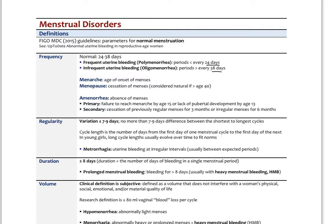Menarche is the age of onset of menses. Menopause is the cessation of menses, and it's considered natural if it's over the age of 40. Amenorrhea is the absence of menses, and it can be primary — that's failure to reach menarche by the age of 15, or lack of pubertal development by age 13. Secondary amenorrhea is cessation of previously regular menses for three months, or irregular menses for six months.